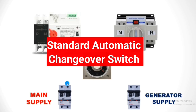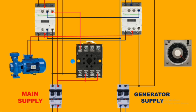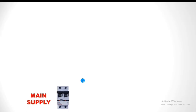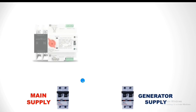In this video we are going to learn about a standard automatic changeover switch wiring and working. First, let's understand why we are calling it a standard automatic changeover switch. For example, if we have two power supplies — the first is the main power supply and the second is generator power supply, which could also be an inverter or solar power supply.